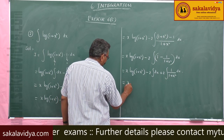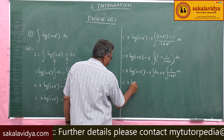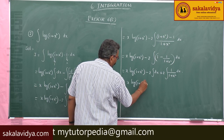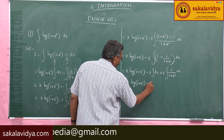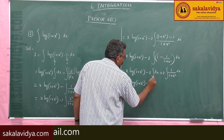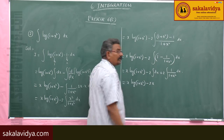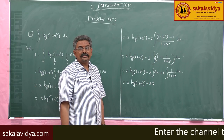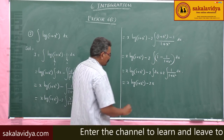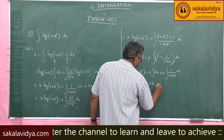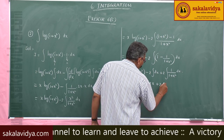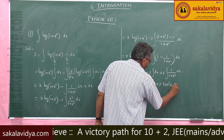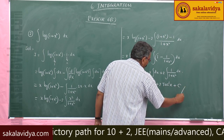So x log(1 + x²) minus 2 times the integral of 1 dx, plus 2 times the integral of 1/(1 + x²) dx. The integral of 1/(1 + x²) is arctan x. Final answer: x log(1 + x²) minus 2x plus 2 tan⁻¹(x) plus constant of integration.